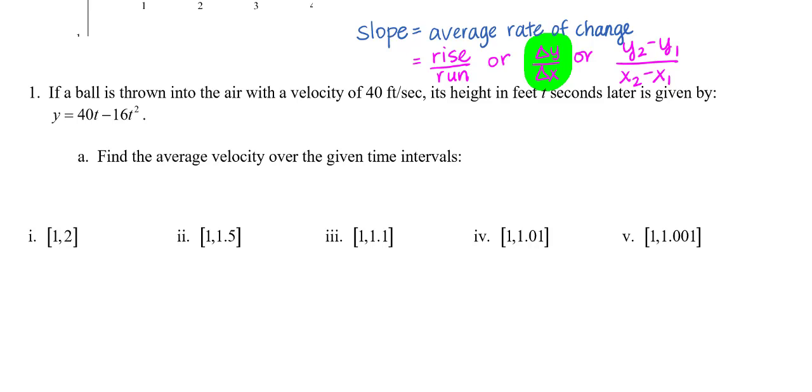Number one says if a ball is thrown into the air with a velocity of 40 feet per second, its height in feet t seconds later is given by y equals 40t minus 16t squared. I'll highlight this so I can keep it handy.